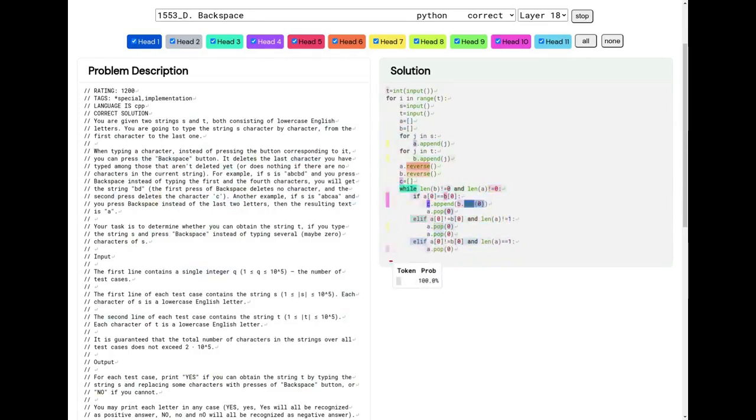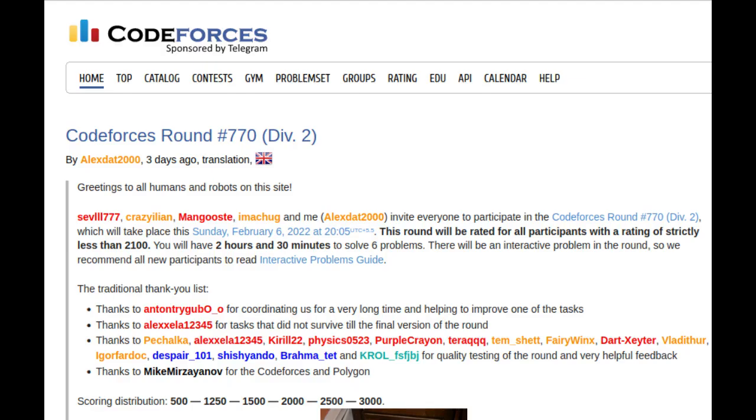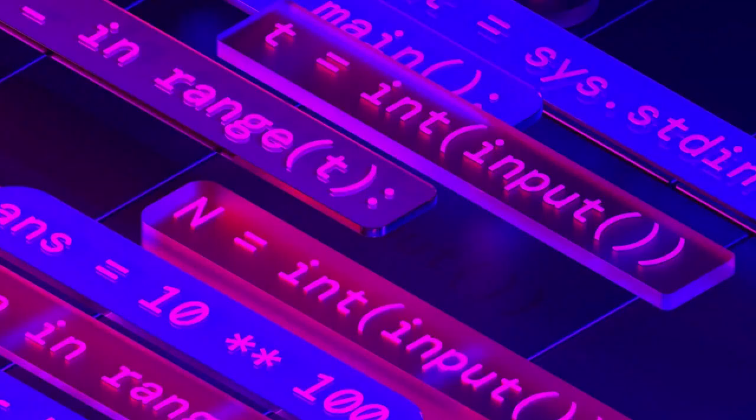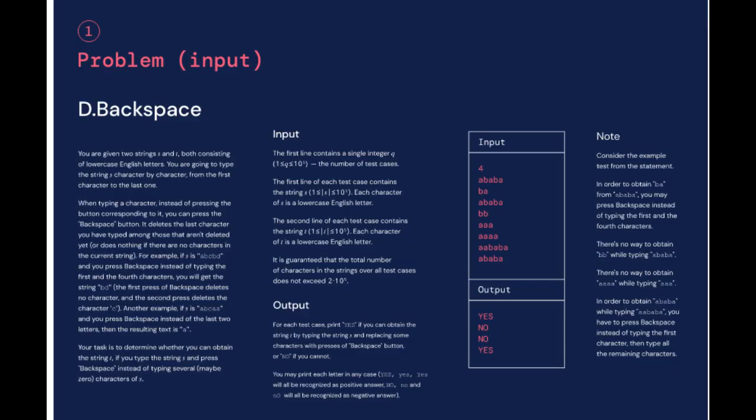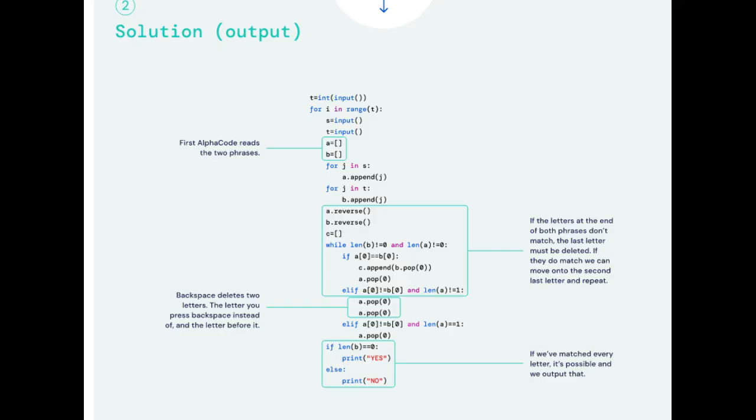DeepMind researchers validated the performance using competitions hosted on CodeForces, a popular platform which hosts regular competitions that attract tens of thousands of participants from around the world who come to test their coding skills. The researchers selected for evaluation 10 recent contests, each newer than their training data. AlphaCode placed at about the level of the median competitor, marking the first time an AI code generation system has reached a competitive level of performance in programming competitions.